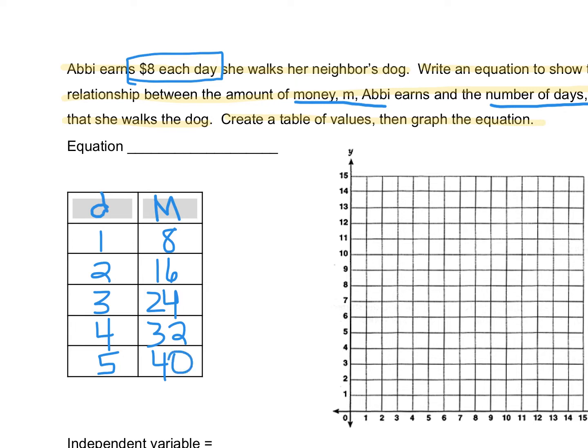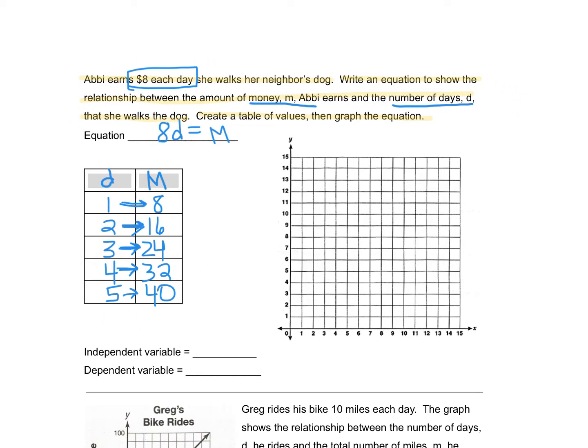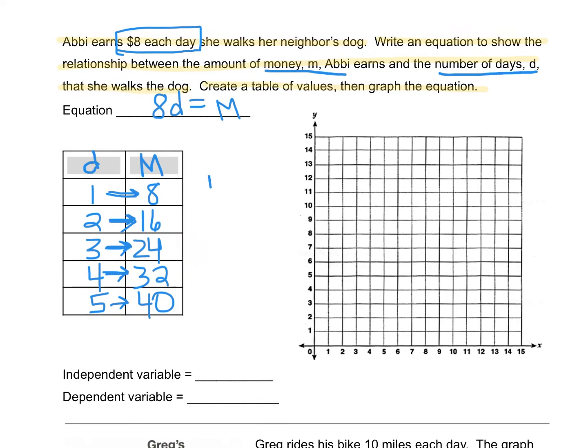So we're looking for the relationship between the days and the money. That means we're looking this direction. What are we doing to one in order to get eight? What are we doing to two to get 16? Do you see the pattern here? Each time we have to take the number of days and multiply it by eight. So we're going to say 8d, eight times however many days she does this, will equal the amount of money that she makes.